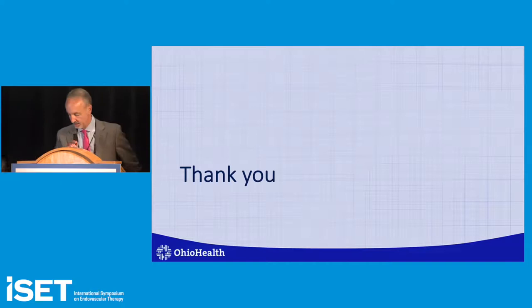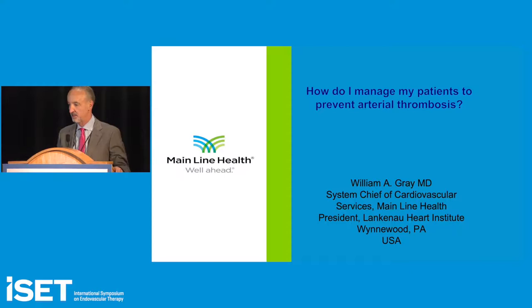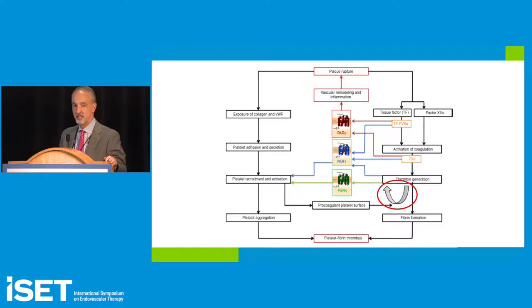Thanks. You've seen a lot of this already — there will be some repetition, but that's okay. The progression of arterial disease is really based on plaque rupture. Once plaque ruptures, this is an uncontrolled event.